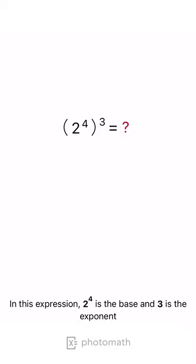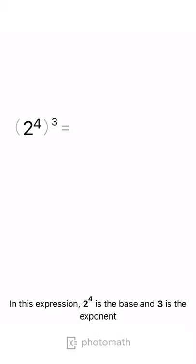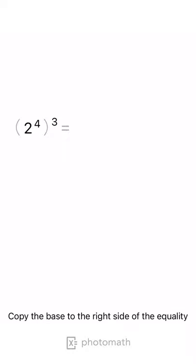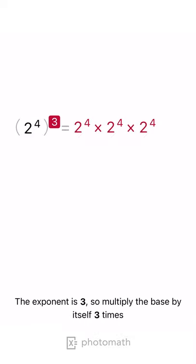In this expression, 2 to the 4th is the base and 3 is the exponent. Copy the base to the right side of the equality. The exponent is 3, so multiply the base by itself 3 times.